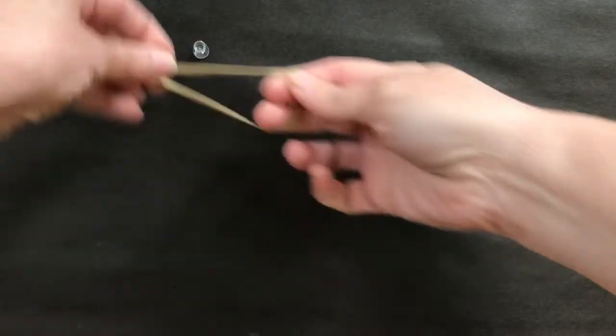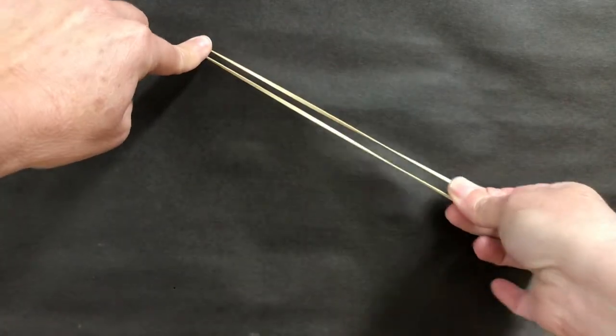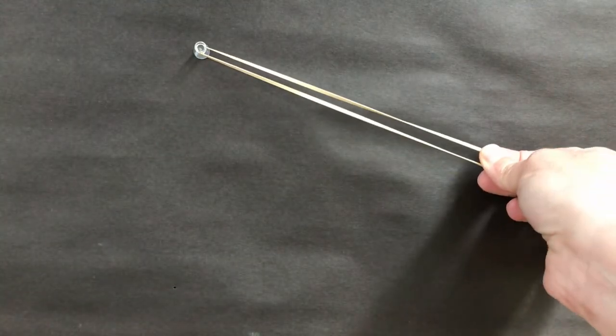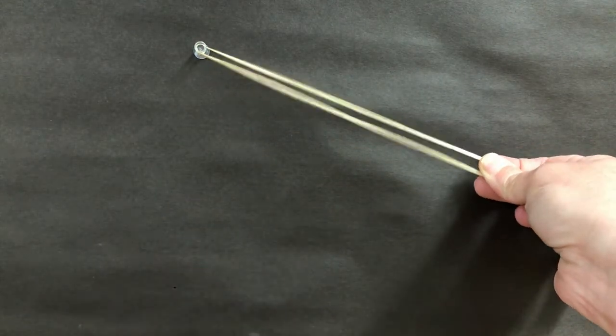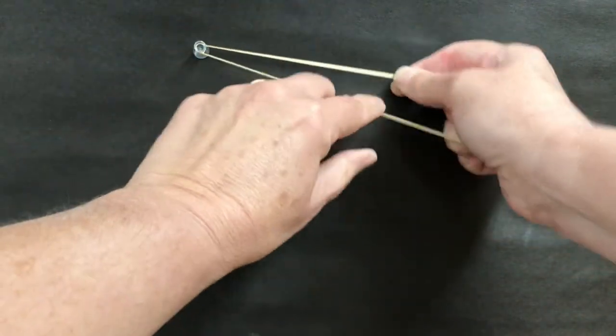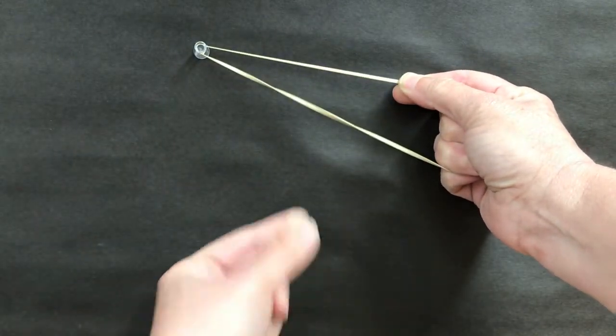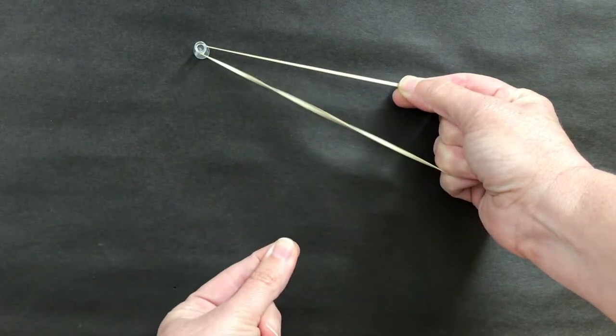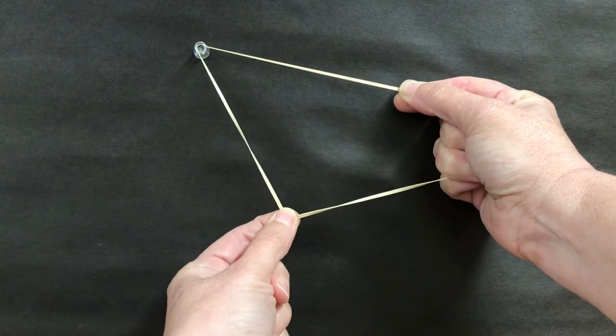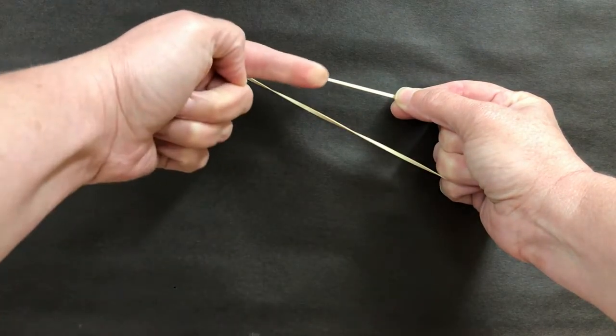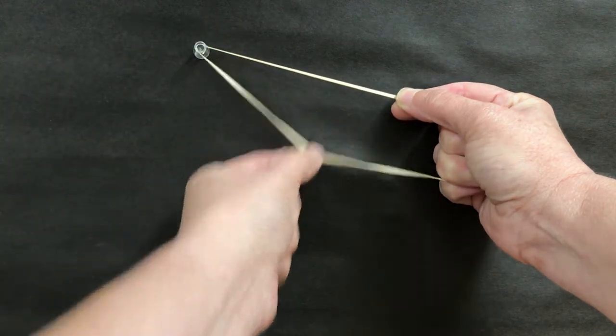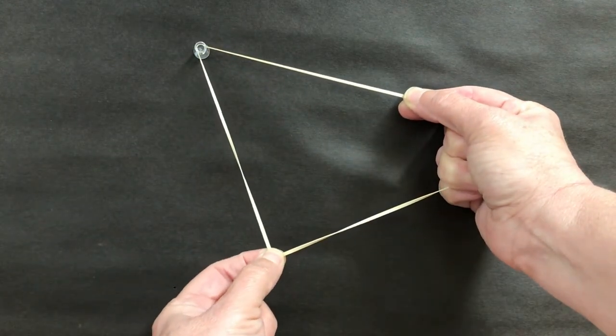Put a thumbtack on my corkboard so I can pull this and now I'm going to pull down one side and let go. Try that again. Can you see the vibrations as it moves back and forth very quickly? It moves back and forth so quickly it looks like it's in more than one place at once.